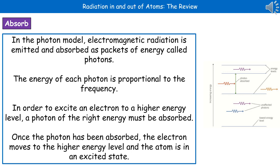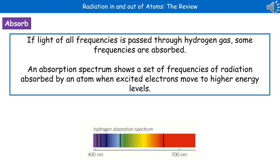In order to excite an electron to a higher energy level, a photon of the right energy must be absorbed by it. Once that photon has been absorbed, the electron moves to the higher energy level, and the atom is then in an excited state.